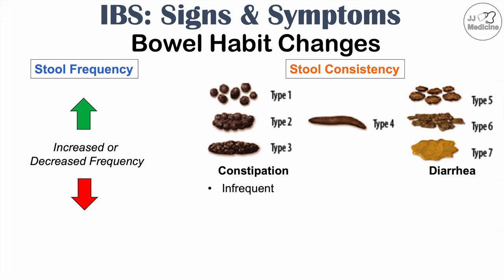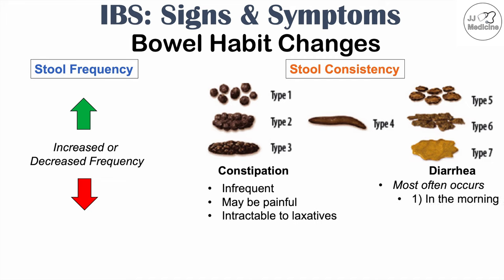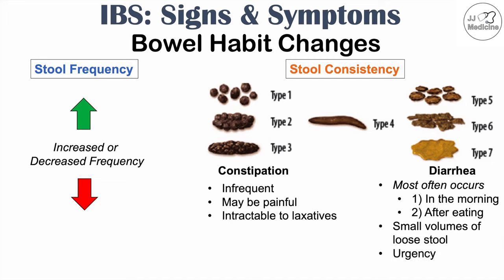With constipation, there is infrequent or decreased frequency of bowel movements. These bowel movements are often described as painful, often type 1 or pellet-shaped, and they are intractable to laxatives — so patients often try laxatives but they often don't help. For patients with diarrhea, it most often occurs in the morning as soon as they wake up and after eating. This diarrhea is often very small volumes of loose stool occurring frequently, and the patient often feels a sense of urgency to get to the bathroom quickly.